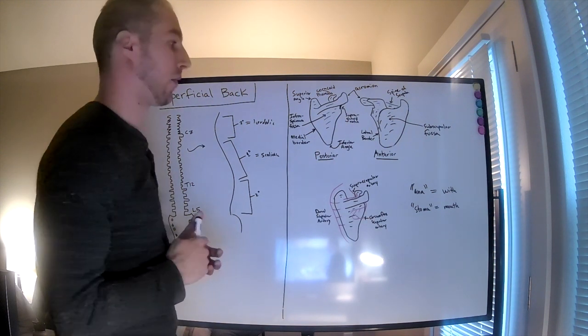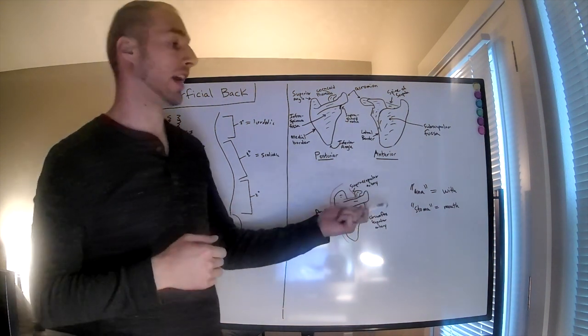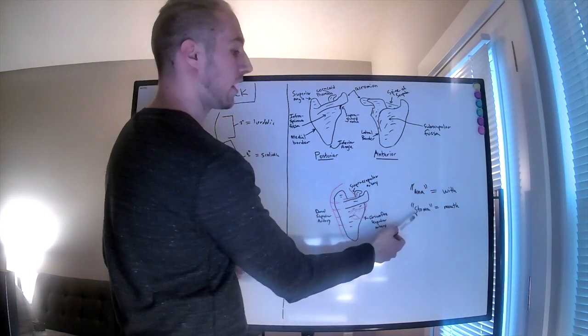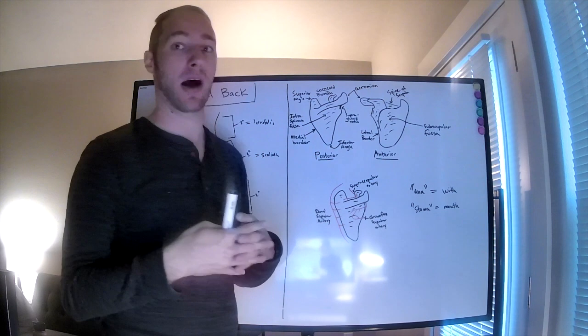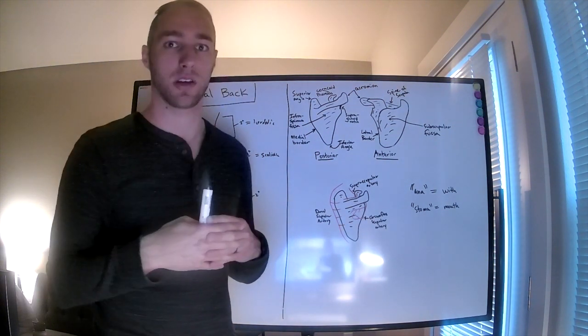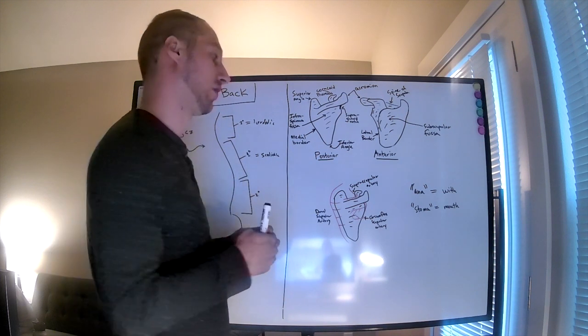For the superficial back, one of the important things is to discuss anastomosis. Ana meaning with and stoma meaning mouth, so with mouths, which allows for multiple vasculature feedings of our arteries to a particular target.